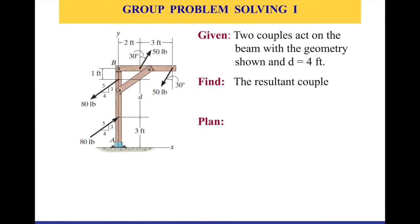So this is our problem that we're going to solve. Given two couples, you can see that we have a couple, right, which is the 50 pound. So there are two 50 pounds equal in magnitude and opposite in direction, and I have another 80 pound force going that direction and an opposite equal force in an opposite direction. So I have two couples.